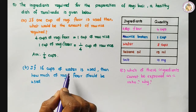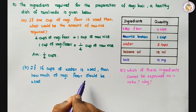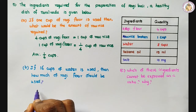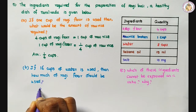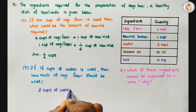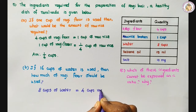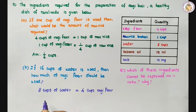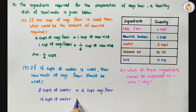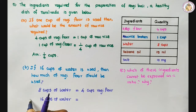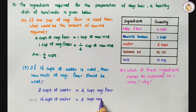Second subdivision: if 16 cups of water is used, then how much ragi flour should be used? For 8 cups of water, 4 cups of ragi flour are used. Here 16 cups of water means 8 multiplied by 2 equals 16. So multiply ragi flour also by 2: 4 twos are 8. Answer is 8 cups of ragi flour.